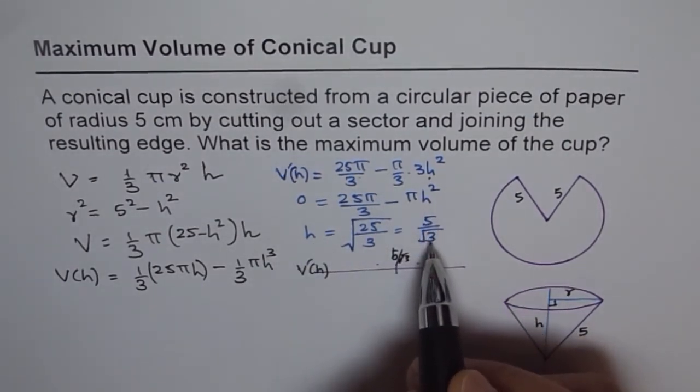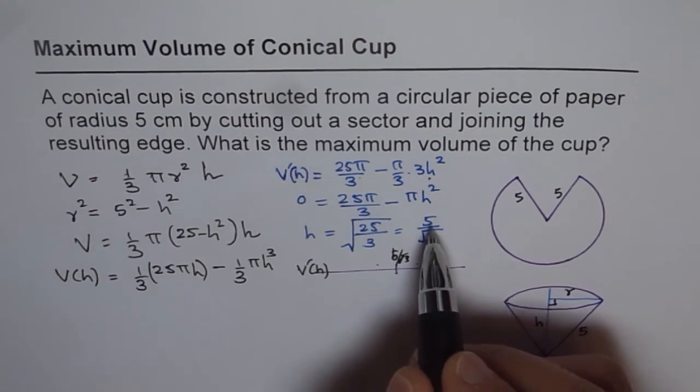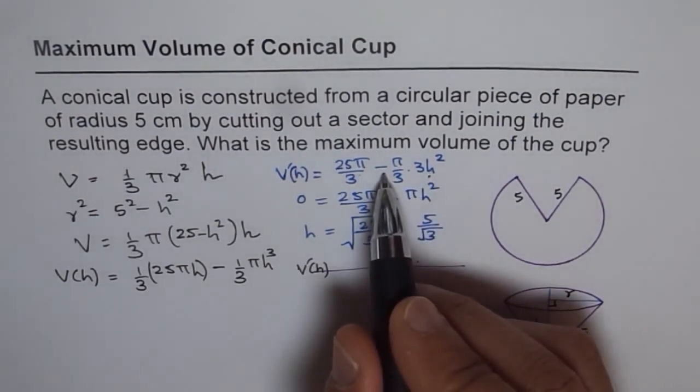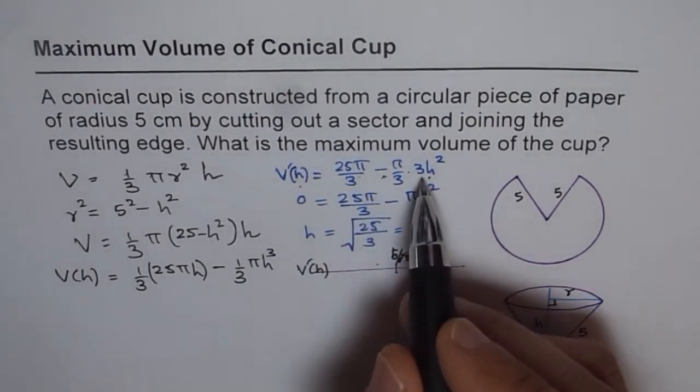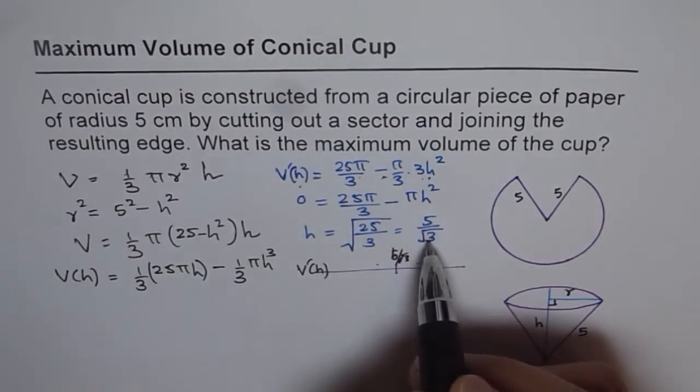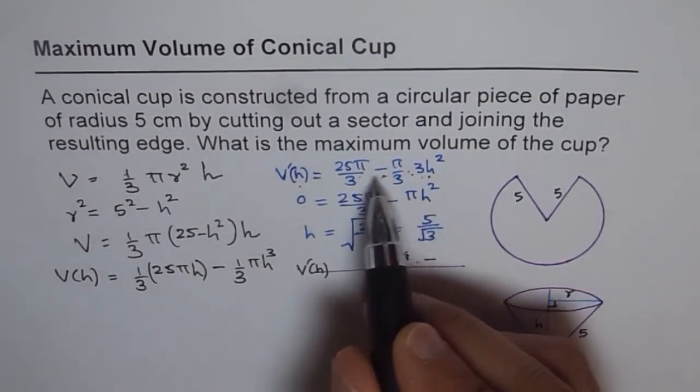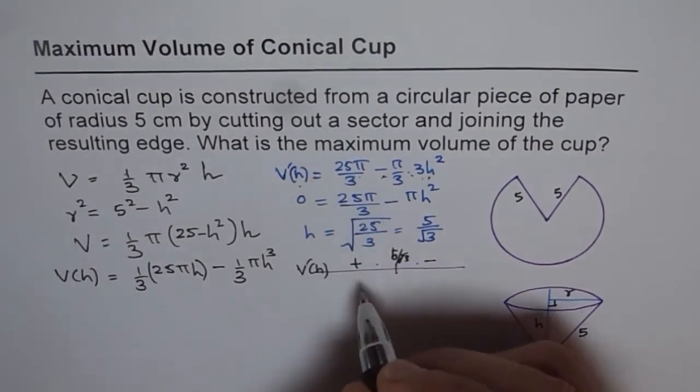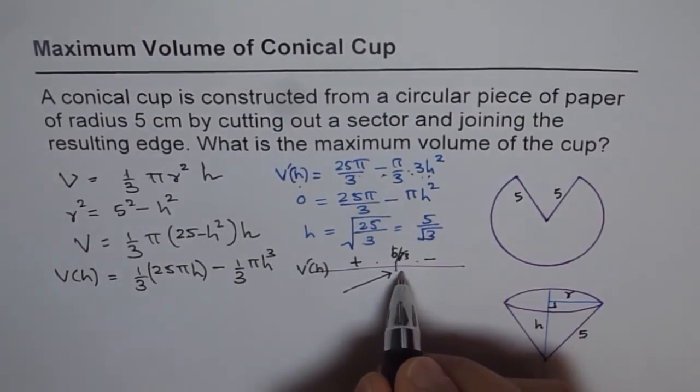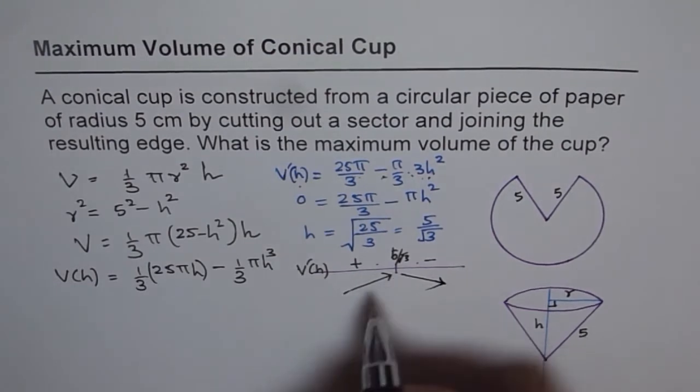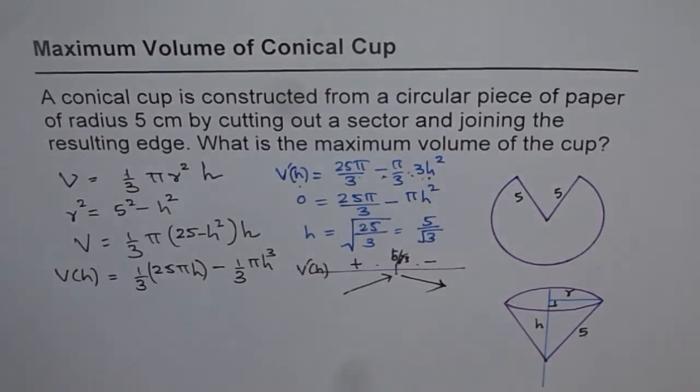Let's look into this expression. We know this is equal to 0 if h is 5 over square root 3. If I take a number more than this, the negative quantity will be higher, and so v dash h will be negative. But if my value of h is lesser than this, then this negative quantity will be lesser and we'll get a positive value for v dash h. Therefore v dash h will be increasing before h is 5 over square root of 3 and decreasing thereafter. So indeed we do have a maximum for h equals to 5 over square root of 3. So that is how we prove that we have a maximum at h equals to 5 over square root of 3.